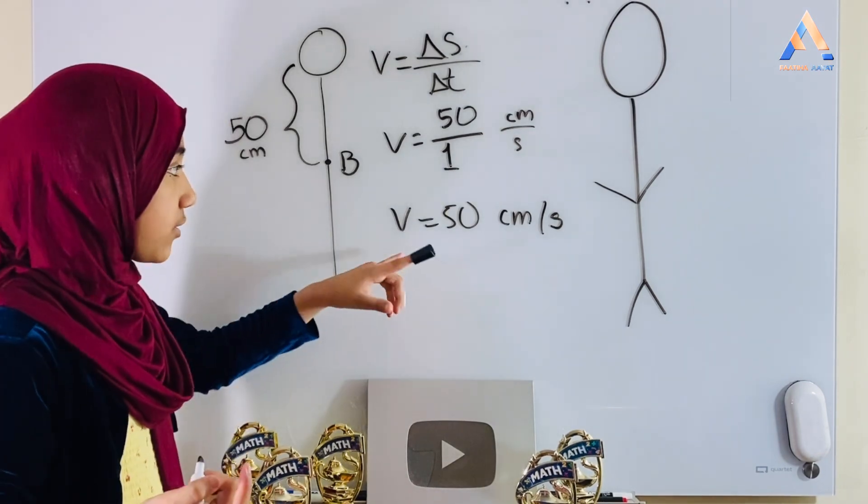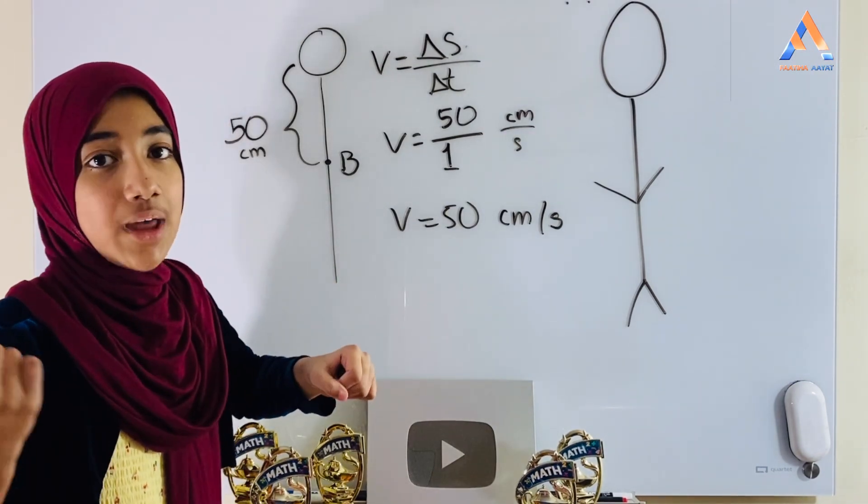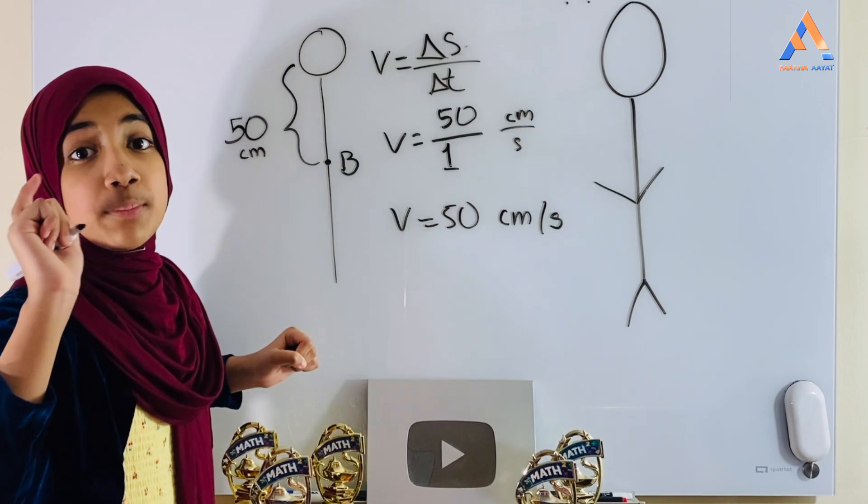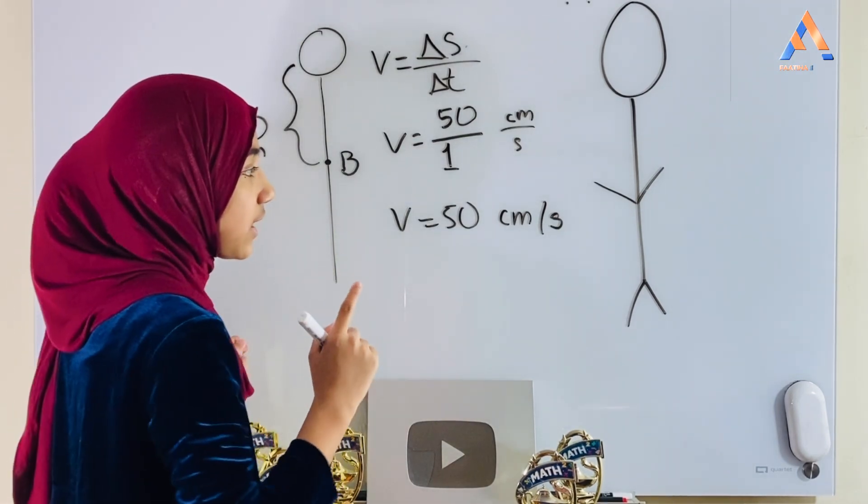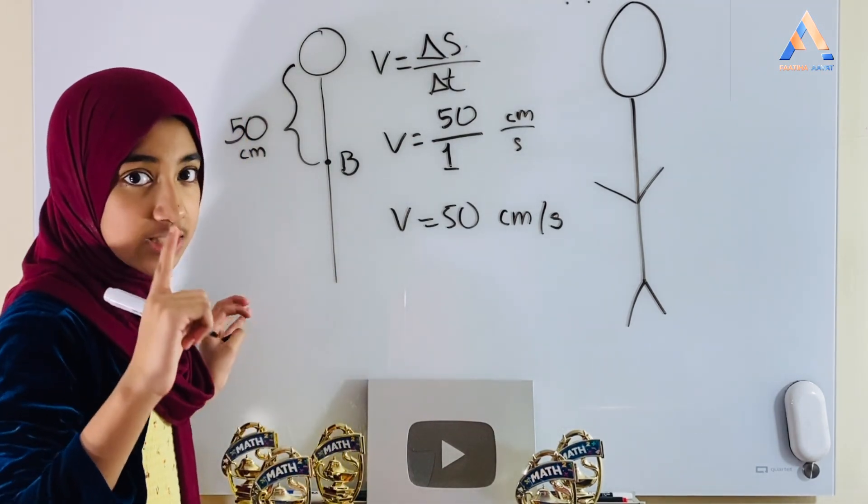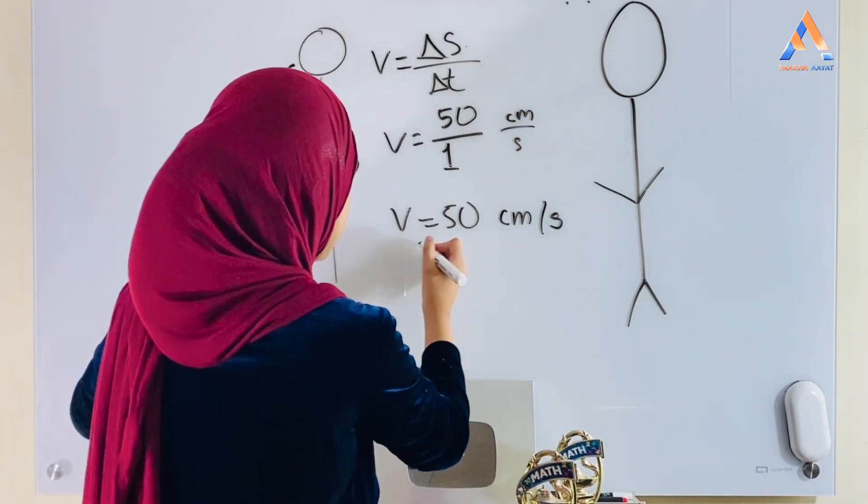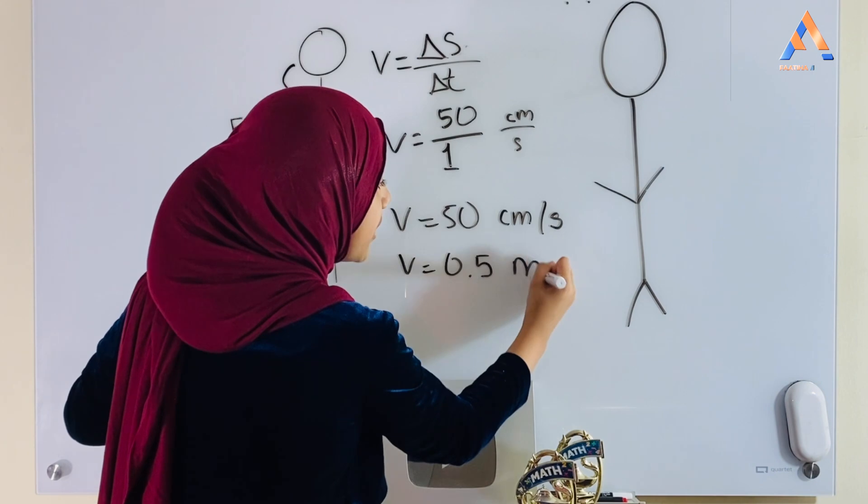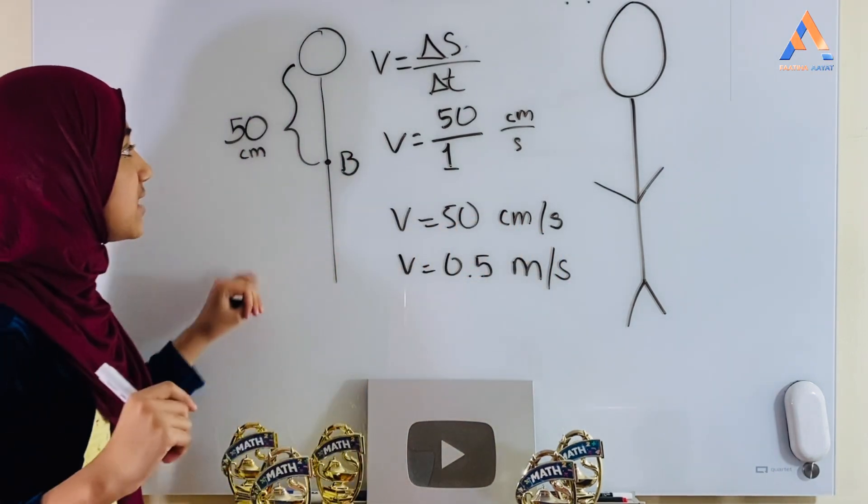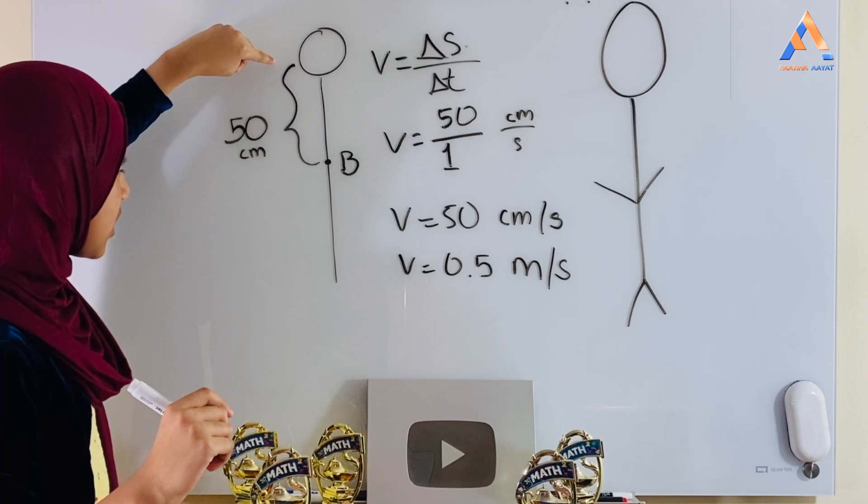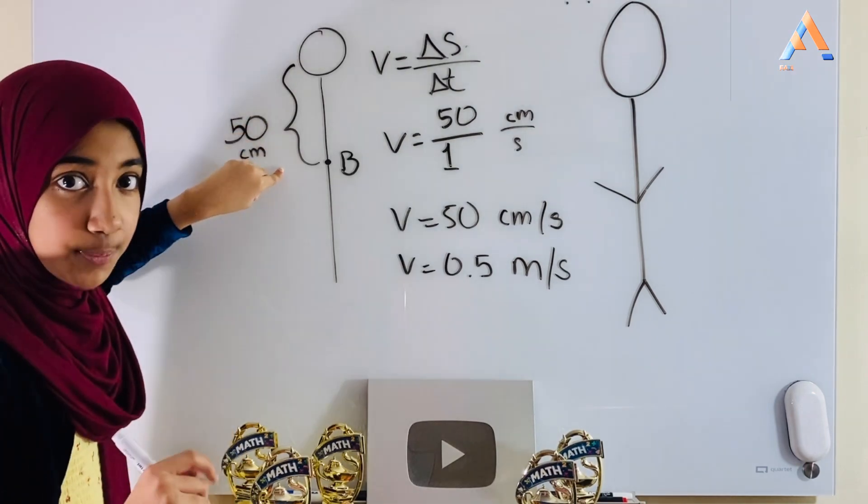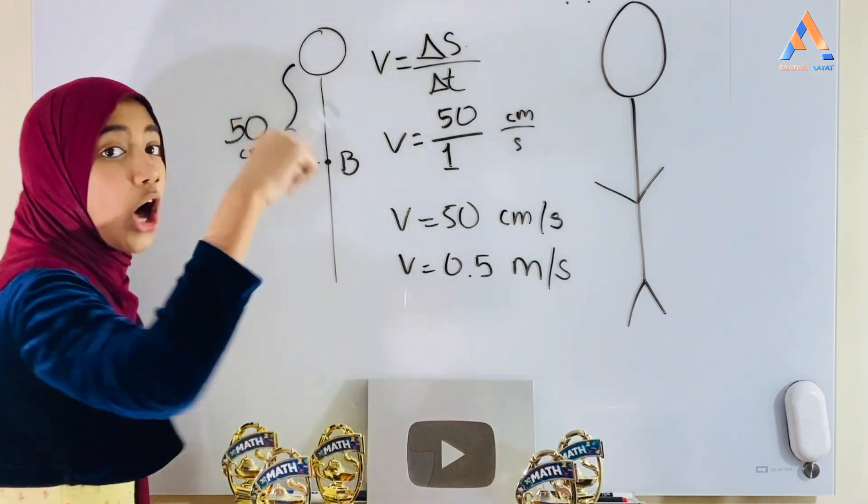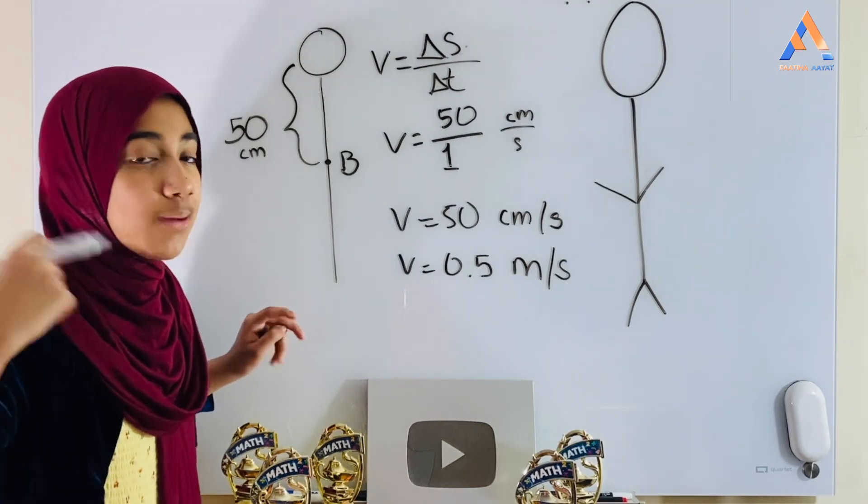But the person doesn't want the velocity at which it comes down. The person wants the velocity exactly on point B at the time of point B.